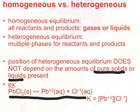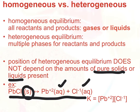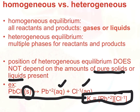If we look at this equation, notice we have two products that are in the aqueous phase and we have a solid reactant. So when we go to write our equilibrium expression for this heterogeneous equilibrium, we are going to exclude the solid. In this case, PbCl2 is excluded, and we just report our equilibrium expression with respect to the two components that are not a pure solid.